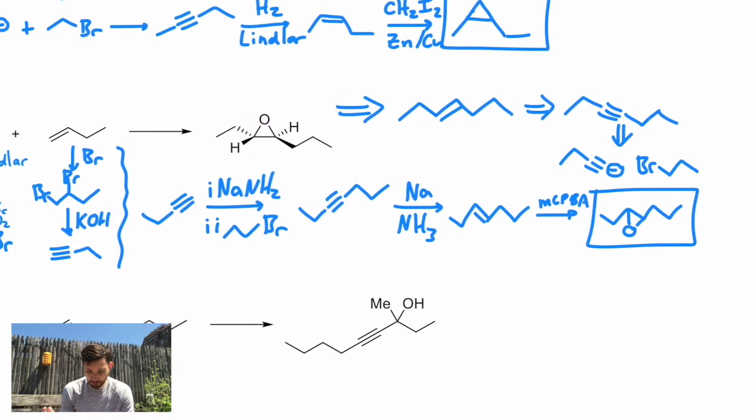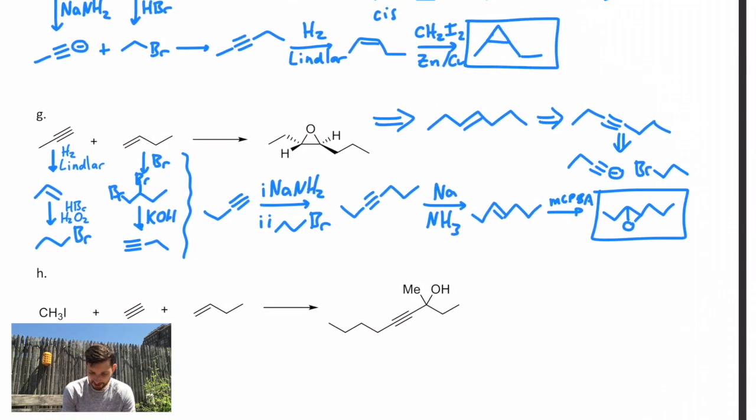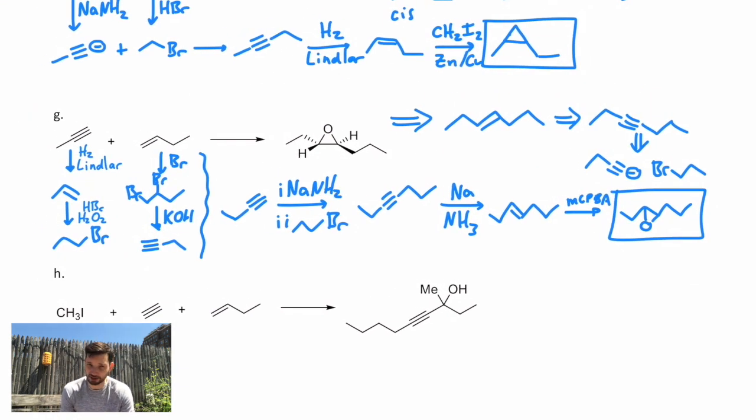Okay, so good review of cyclopropanation and epoxides. And you notice the key reaction we're using a lot here is this combination of an alkyne anion to make a longer carbon chain. For now, that's pretty much our only carbon-carbon building reaction, where we can take small molecules and turn them into bigger ones. Don't worry, we'll learn a lot more as the year goes on.